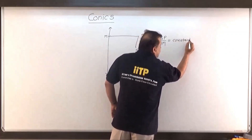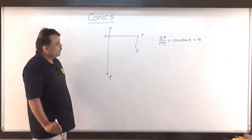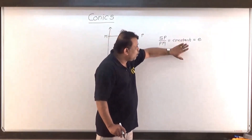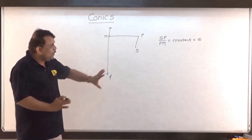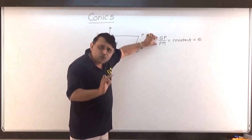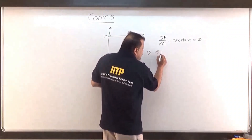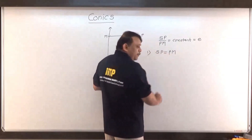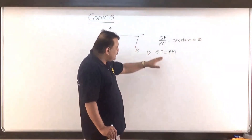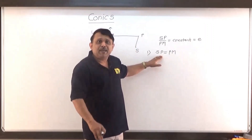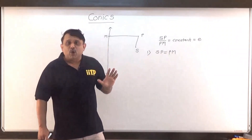The ratio SP upon PM is constant, and this constant is denoted by the letter e, called the eccentricity of the conic. So SP upon PM equals e, the eccentricity. Now, dealing with these two distances, I can make three cases. Case one: when the distances SP and PM are the same, when SP equals PM, automatically e becomes 1. If I collect those points P such that SP equals PM, then the locus formed by P is called a parabola.